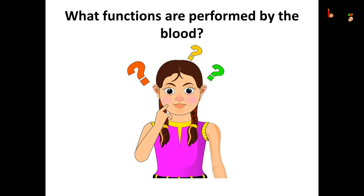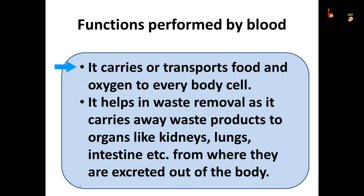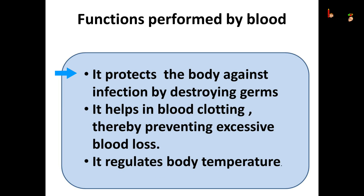What are the functions performed by the blood? The blood transports food and oxygen to each body cell. It also helps in removal of waste products, carrying them to organs such as the kidneys, lungs, and intestine, from where they are excreted out of the body. The blood protects the body against infection by destroying the germs. It also helps in blood clotting, thereby preventing excessive blood loss. And lastly, the blood also regulates the body temperature.